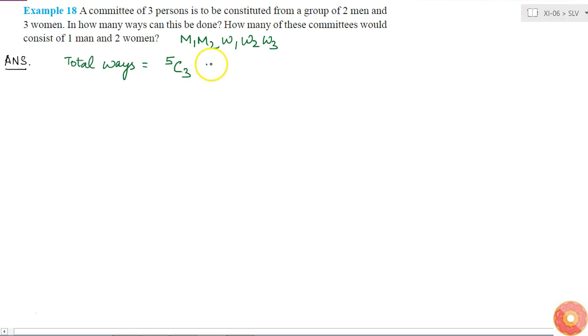It is not 5P3. So this is equal to 5 factorial by 3 factorial into 2 factorial. This will be equal to 5 into 4 into 3 factorial divided by 3 factorial into 2 into 1. So 3 factorial will get cancelled and 2 will get cancelled with 4. So I am left with 2 here, so this is 10 ways.